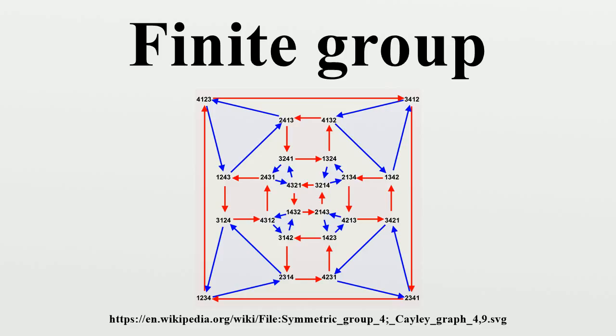During the second half of the 20th century, mathematicians such as Chevalier and Steinberg also increased our understanding of finite analogues of classical groups and other related groups. One such family of groups is the family of general linear groups over finite fields.